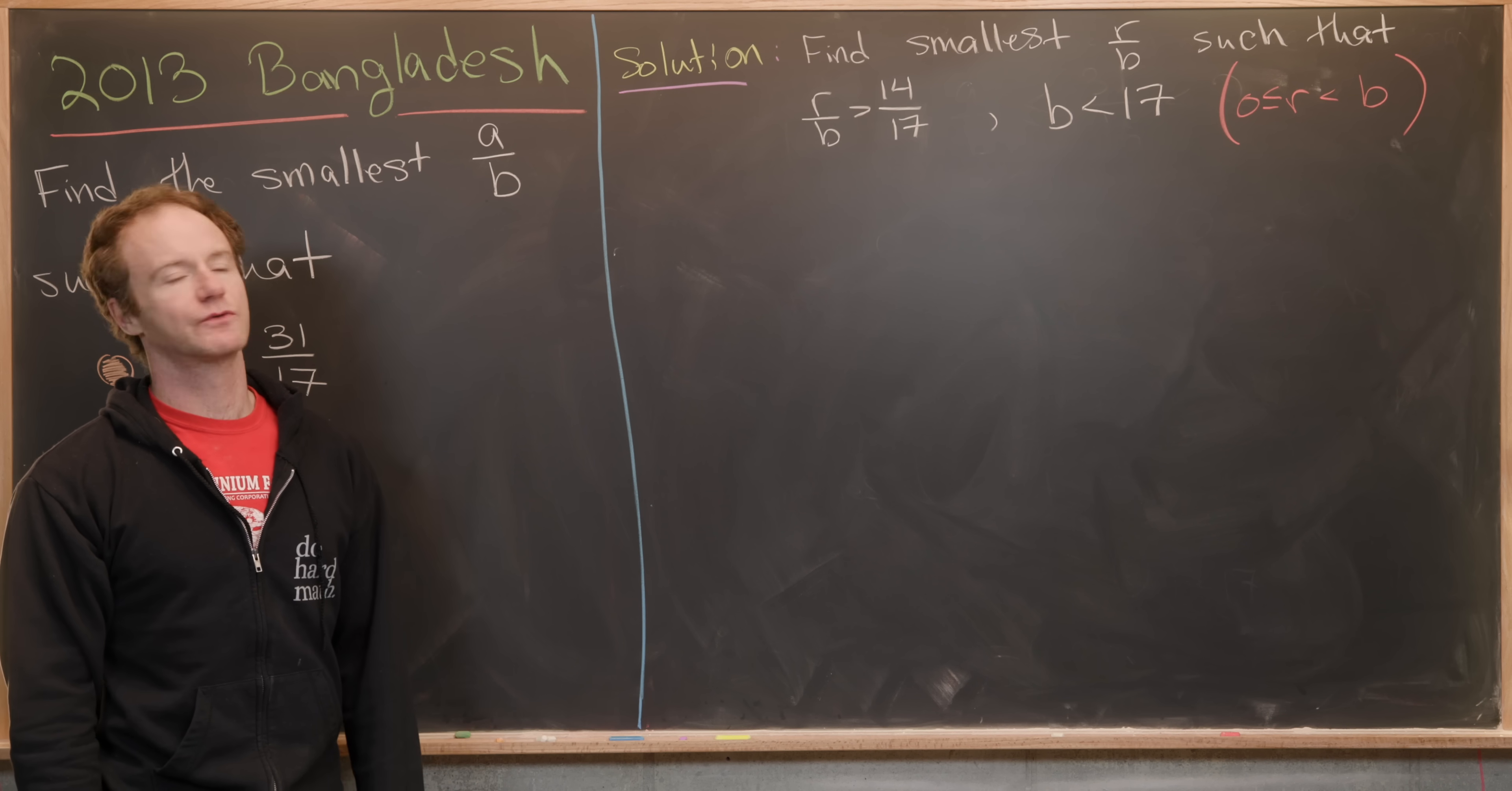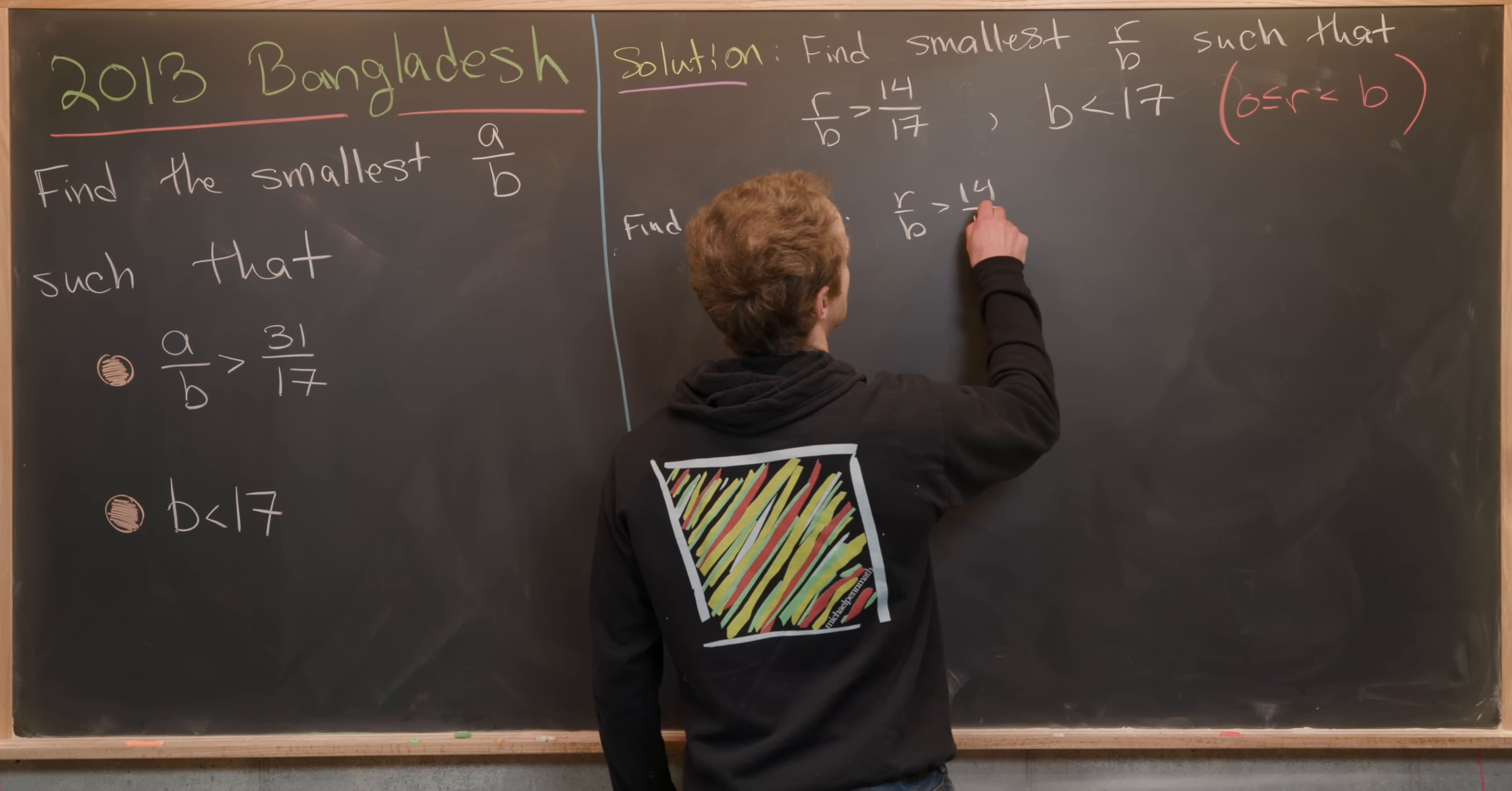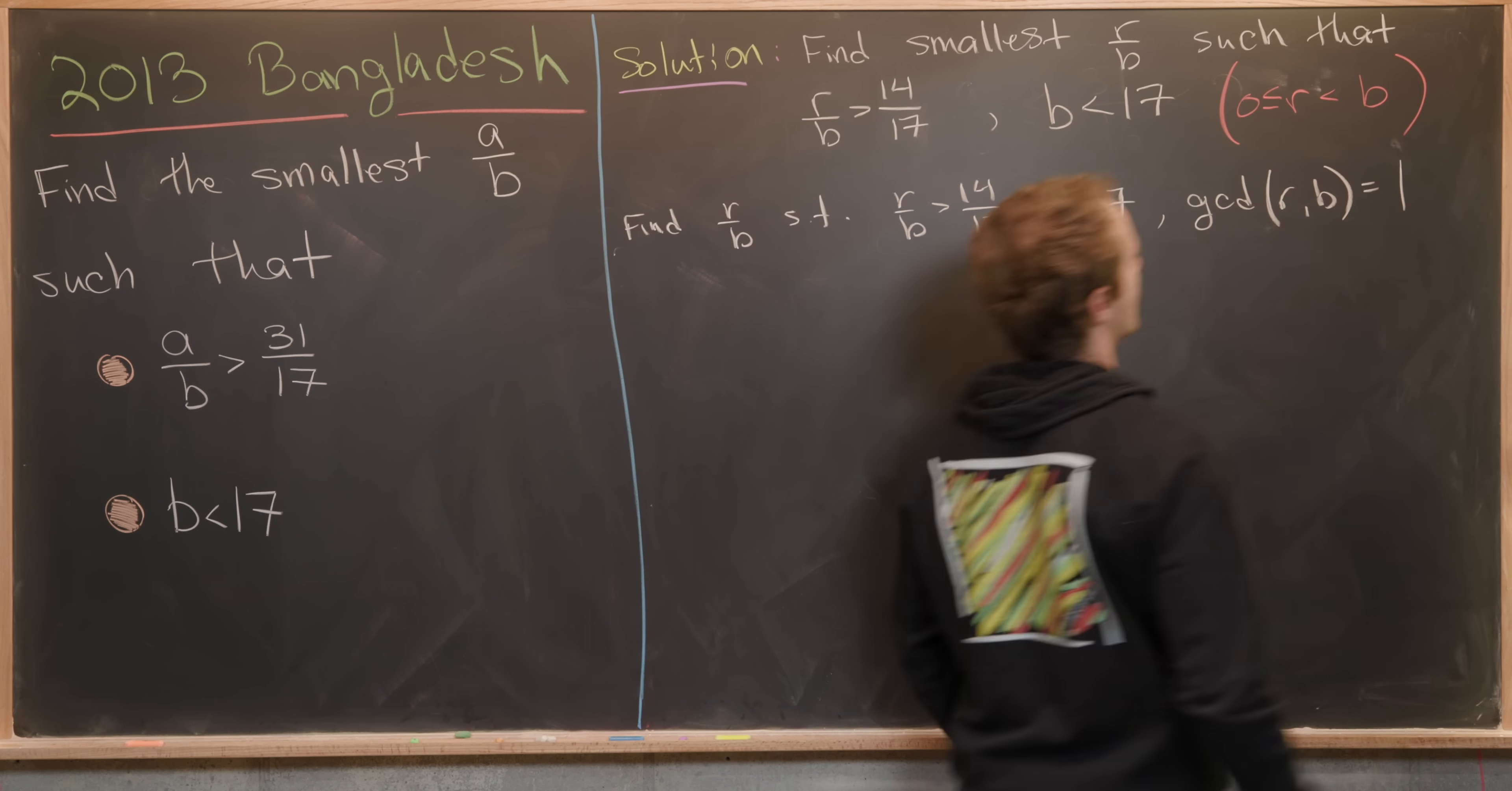We can continue to reduce the number of things we have to check. We have to find R over B such that R over B is bigger than 14 over 17, B is less than 17, and we might as well take the GCD of R with B to be equal to 1.